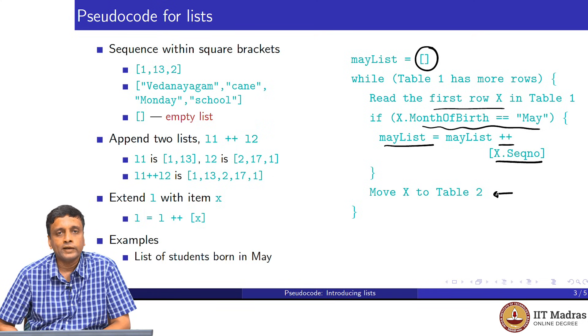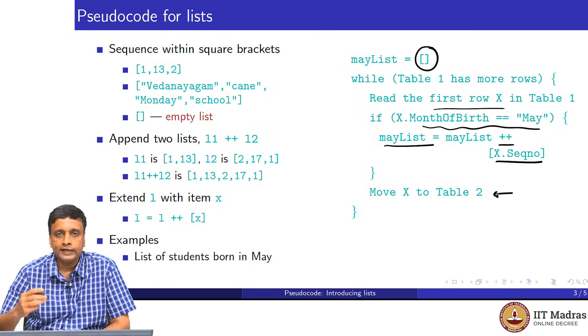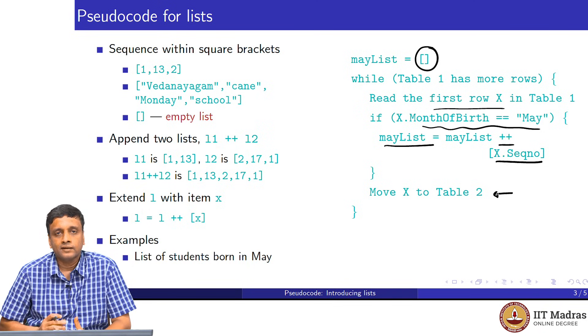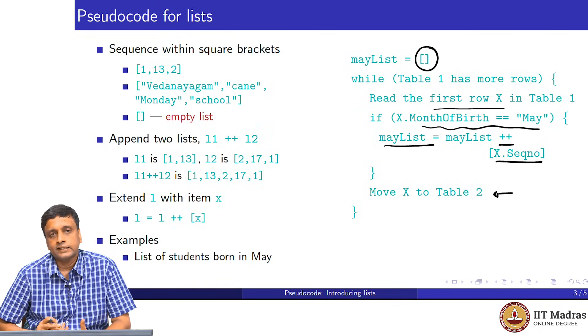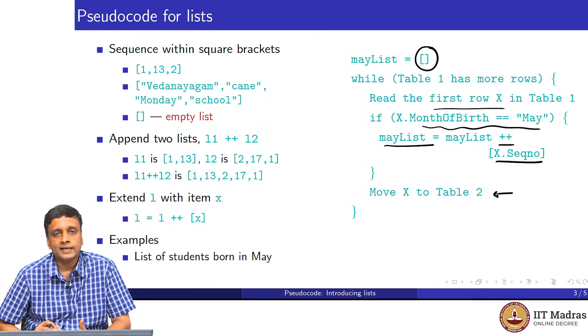In this way, we are accumulating the sequence numbers or the IDs of all the students who are born in May into this list, May list. And of course, as we read a row, we move it into another table so we do not have to process it again. In this way, we keep going until we exhaust the rows. This way, we read all the rows in the table, and from that, we extract the relevant information, in this case, the sequence number provided the column with month, date of birth has month May.